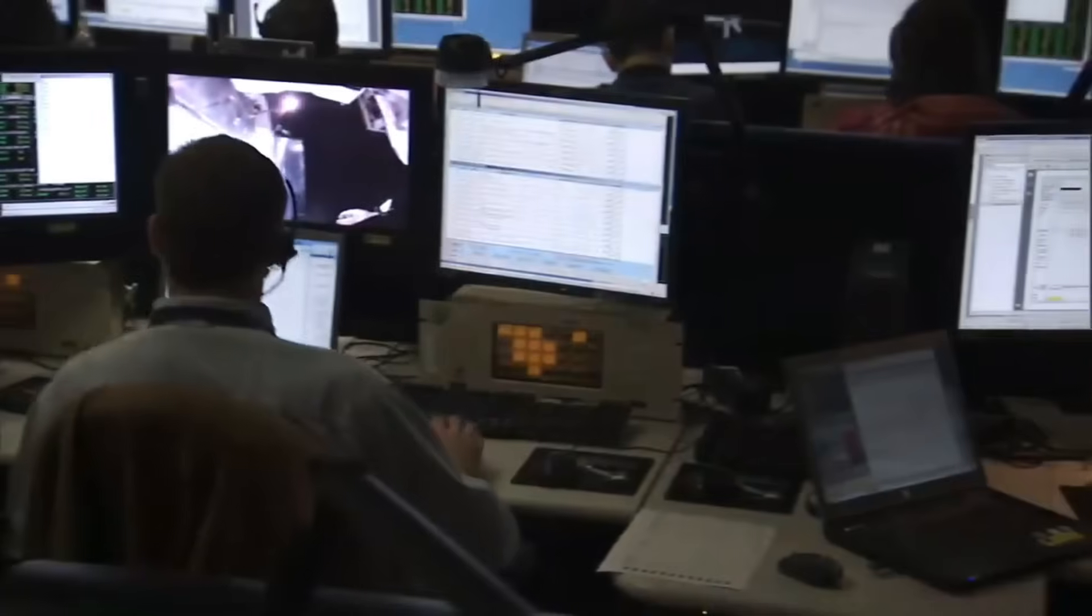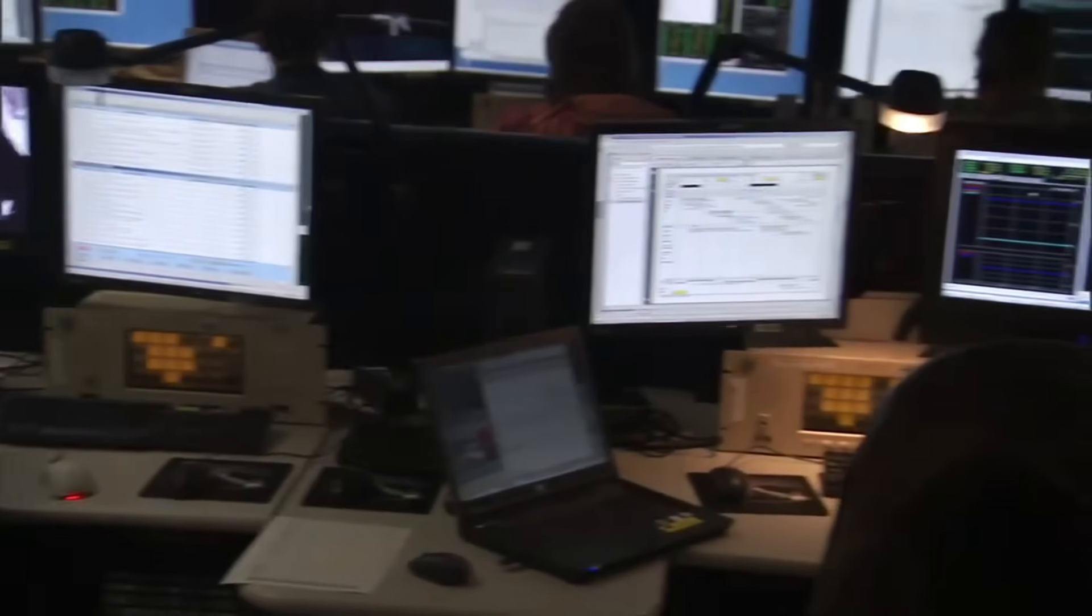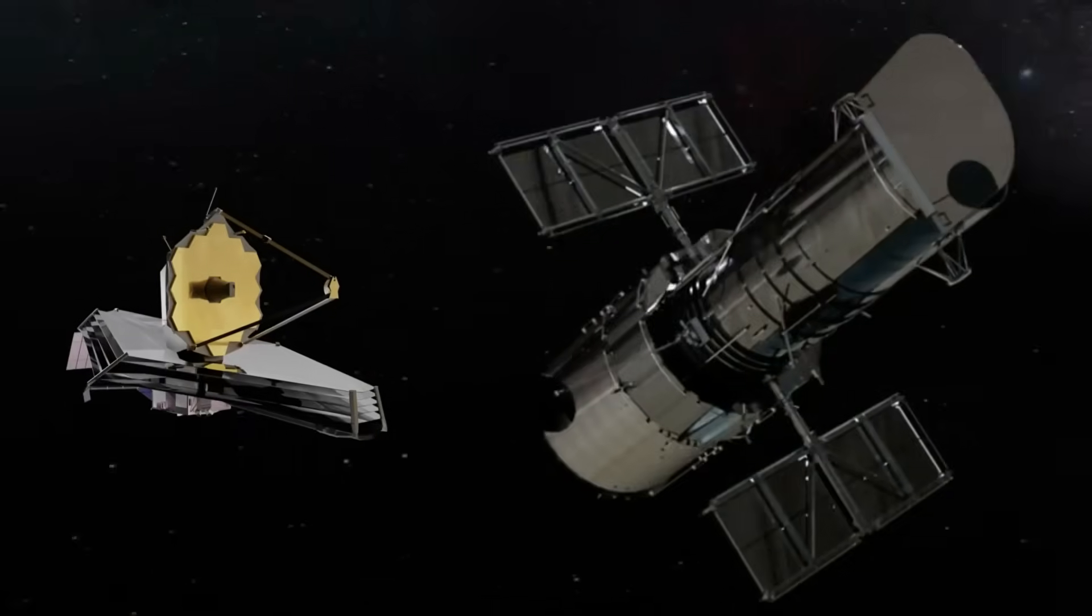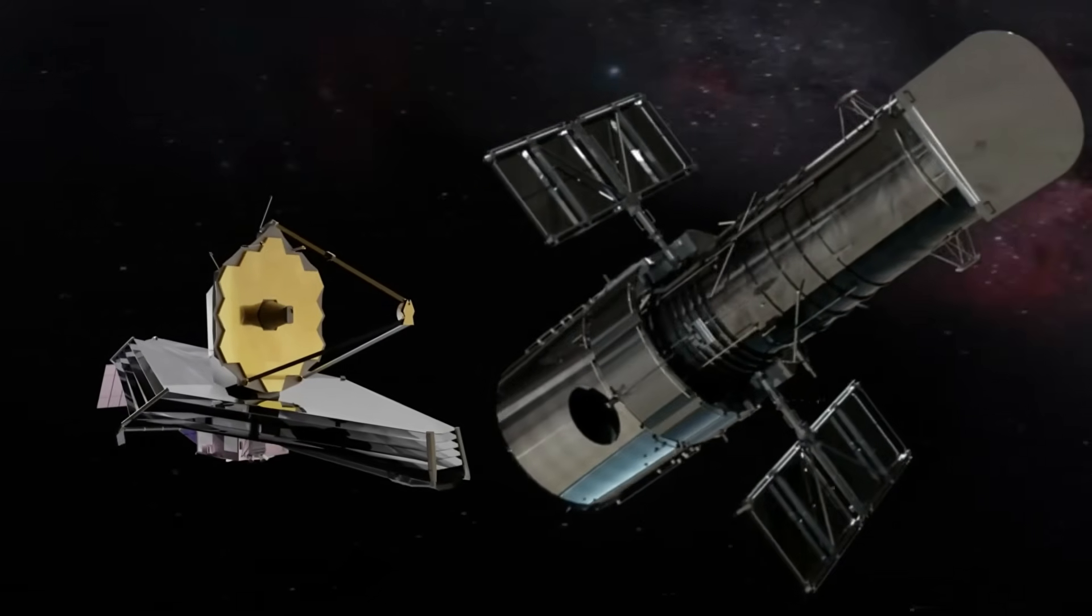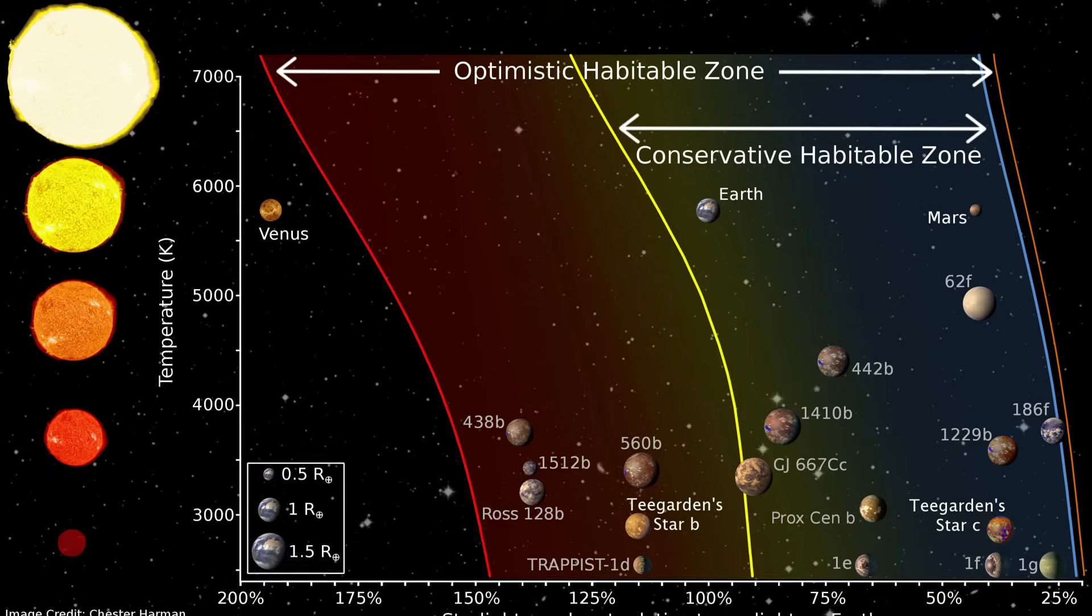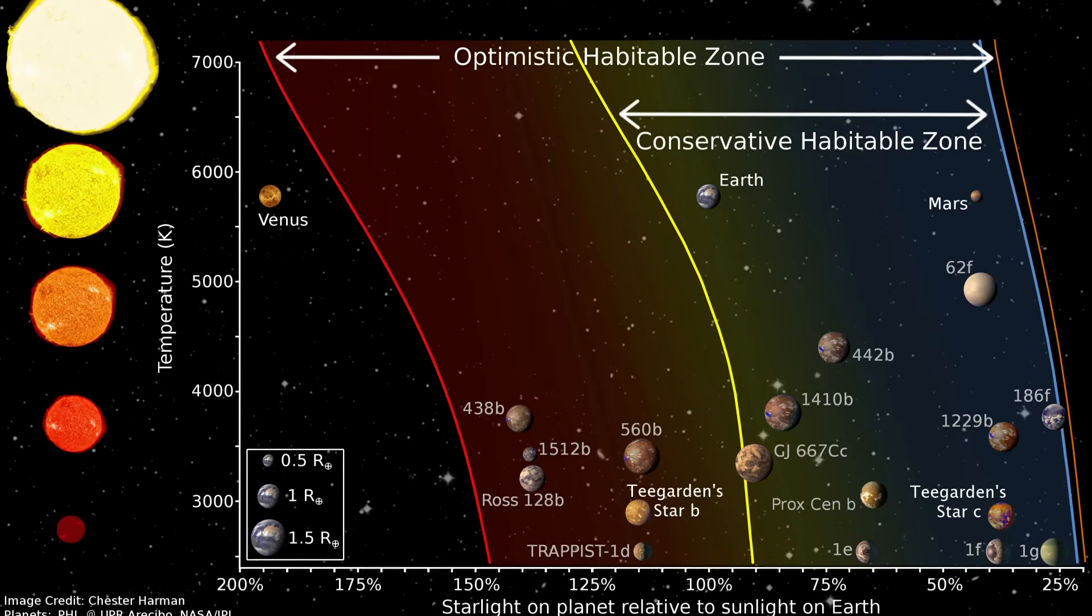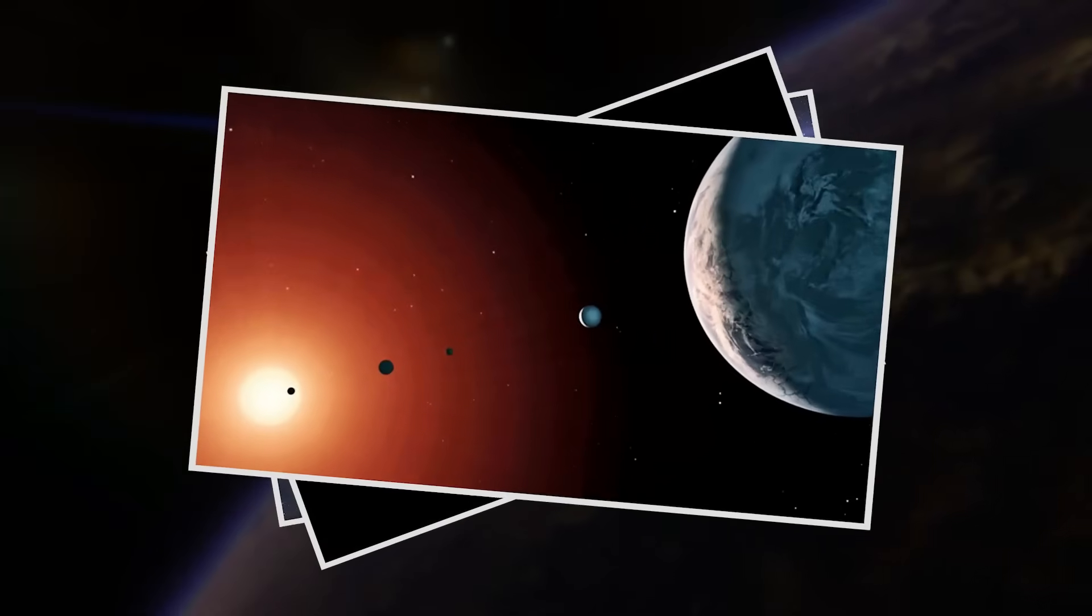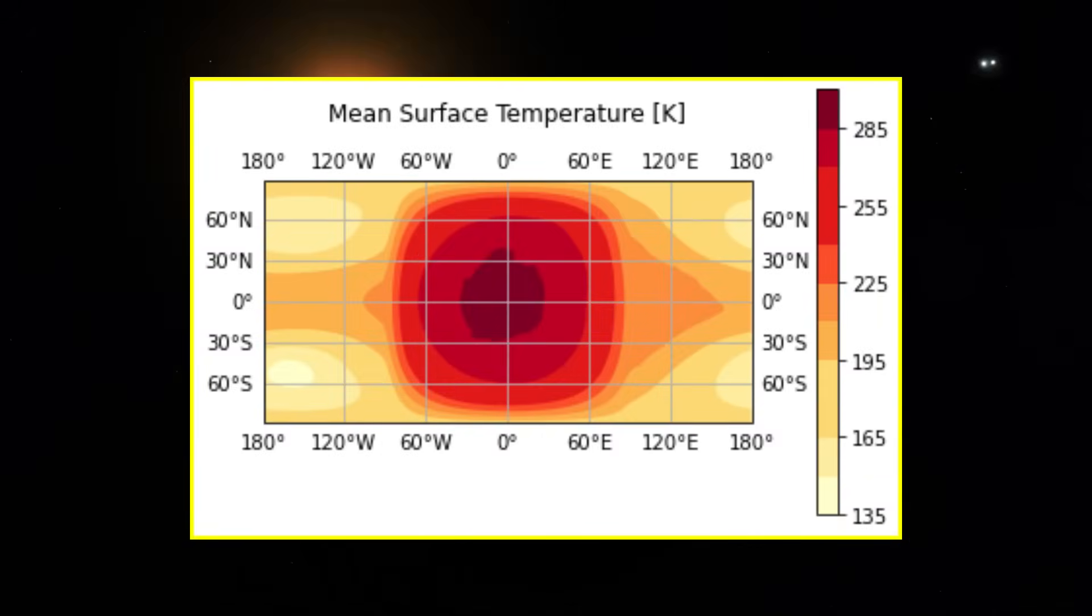With the discovery confirmed, scientists are now focused on analyzing the data to determine what this anomaly actually is. Observations from multiple telescopes have revealed three distinct characteristics that make this structure unlike anything previously seen on a rocky exoplanet. Three key anomalies that don't match standard models. One: unusual thermal readings.